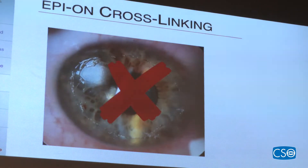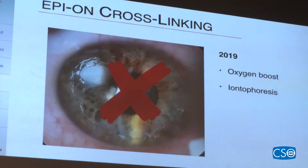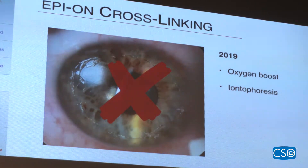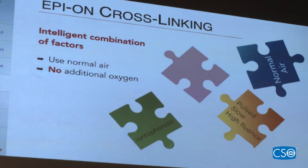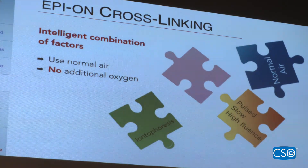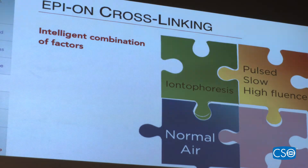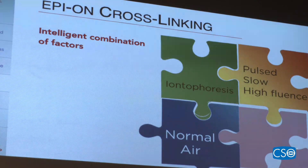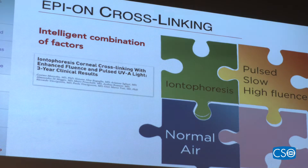Since 2019, with oxygen improvement techniques such as oxygen boosts or iontophoresis, epi-on is a reality with good short-term results. This was pioneered by Cosimo Mazzotta from Italy, who created an intelligent combination compensating for oxygen by using iontophoresis combined with slow fluence, slower irradiation time, and higher fluence — achievable with normal air without any oxygen boost.